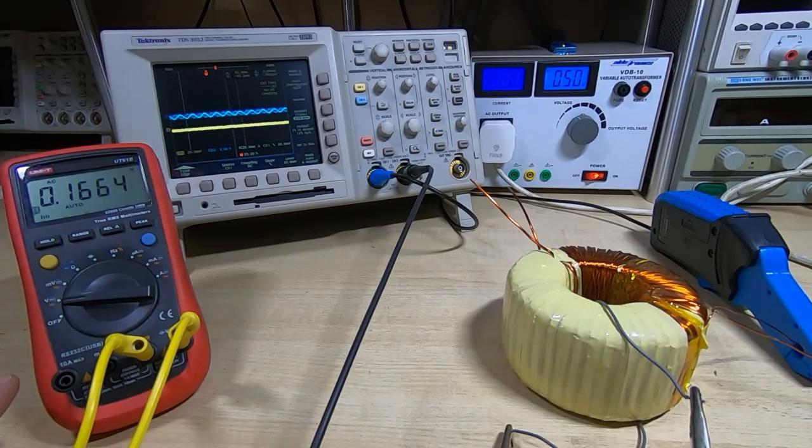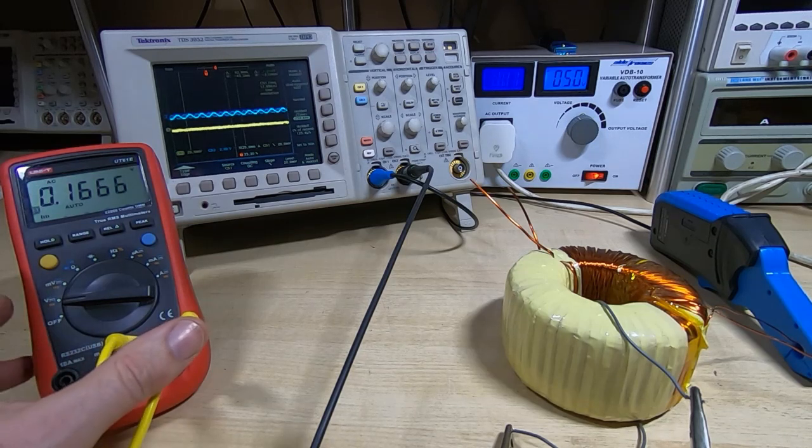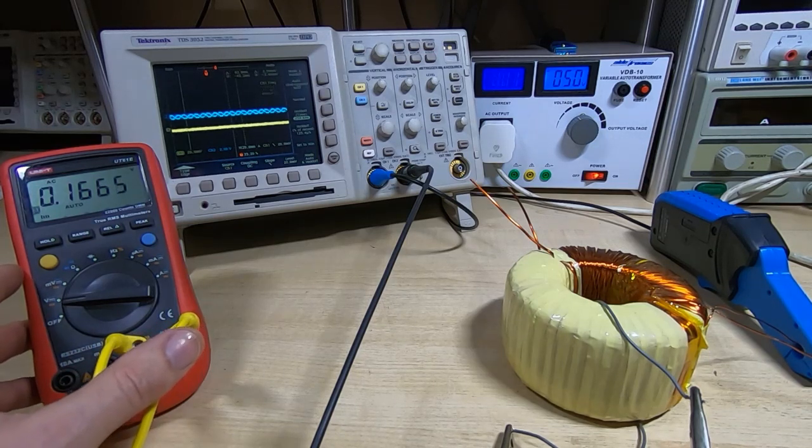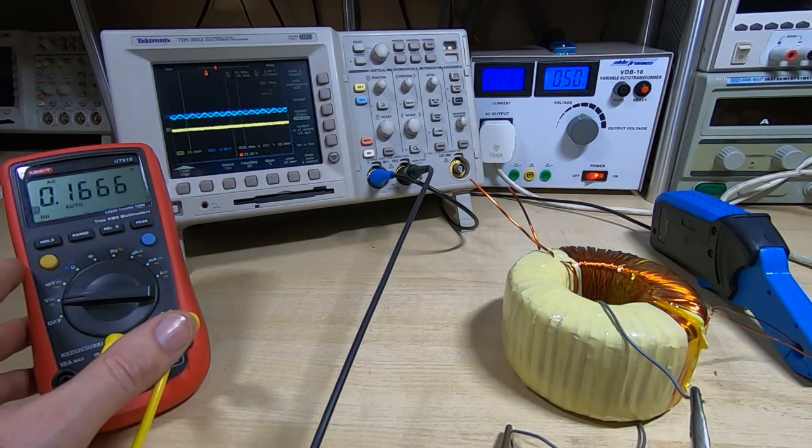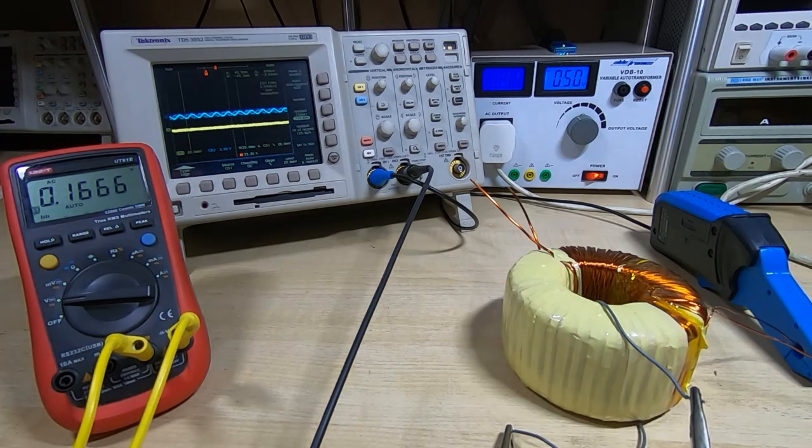This is the RMS value coming out of the transformer. You do need to use a multimeter that gives you true RMS for this because you won't be getting a pure sine wave. A true RMS meter will give you much better results.